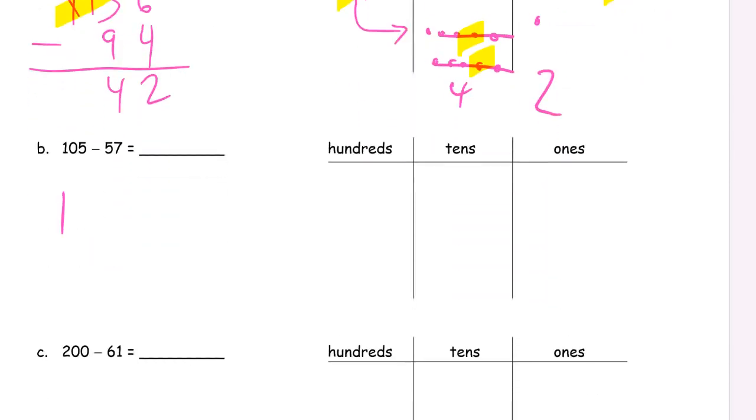So let's go 105, subtracting 57. And this time I don't have enough ones and I don't have any tens. So I'm going to have to unbundle this hundred. It's going to be one of those. 10 tens. Unbundle a 10. 9 tens left. 15 ones. 15 minus 7 is 8. 9 minus 5 is 4. 48. All done.